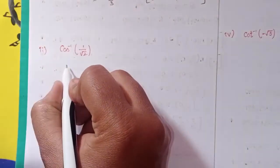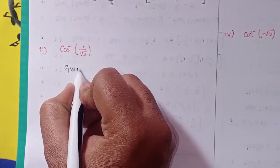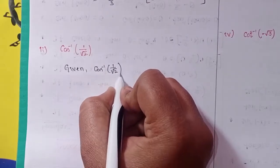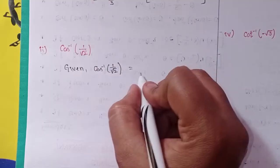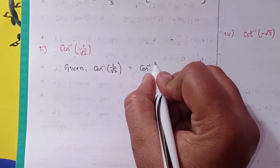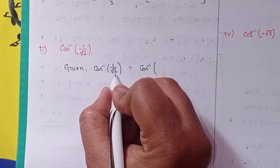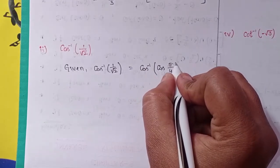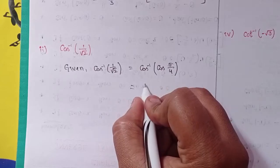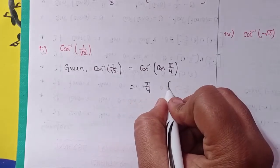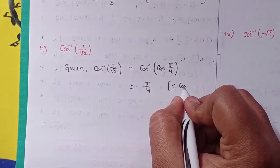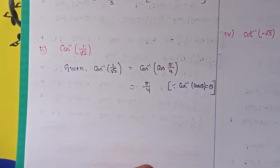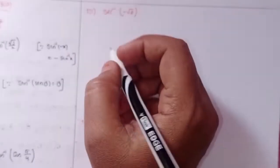Second one: given cos inverse of 1 by root 2. Can I write 1 by root 2 in terms of cos? cos(π/4). So the answer is π/4, because cos inverse of cos theta equals theta.